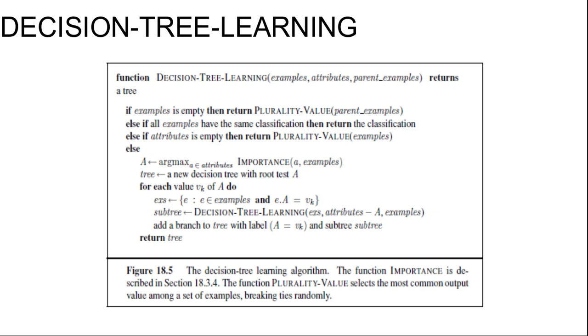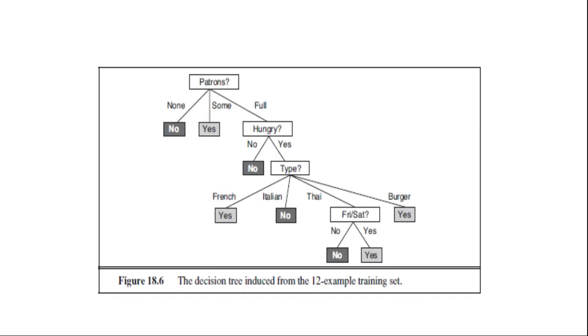A tree consists of just tests on attributes in the interior nodes, values of attributes on the branches, and output values on the leaf nodes. The details of the importance function are given, and the output of the learning algorithm on our sample training set is shown in the next figure.